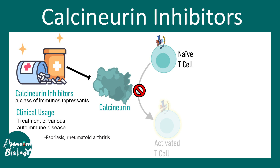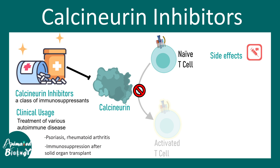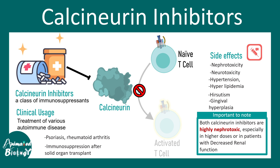Calcineurin inhibitors are clinically used to treat psoriasis and rheumatoid arthritis, and are also used for immunosuppression after solid organ transplant. They have several side effects including nephrotoxicity, neurotoxicity, hypertension, hyperlipidemia, hirsutism, and gingival hyperplasia. Though very potent, they have high nephrotoxicity and can decrease renal function.